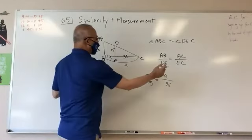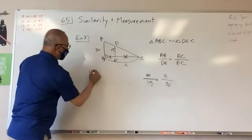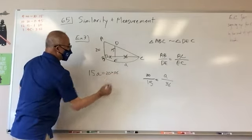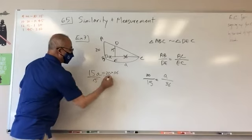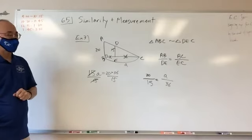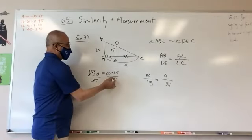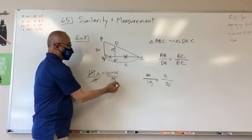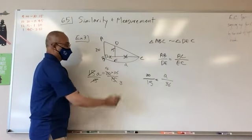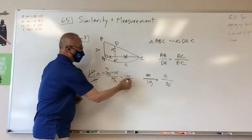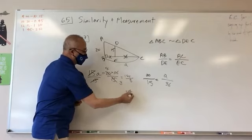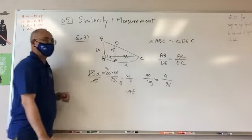So, let's cross multiply, so I'm going to get 15A is equal to 20 times 36, divide both sides by 15, this guy goes away. Okay, I'm going to go ahead and do this, divide the top and bottom by 5, this would be 3, this would be 4, and then 144 divided by 3, which is the same as 48, okay?